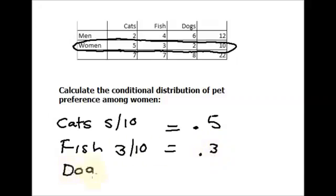And finally dogs. 2 women out of 10 prefer dogs. 2 out of 10 is 0.2.